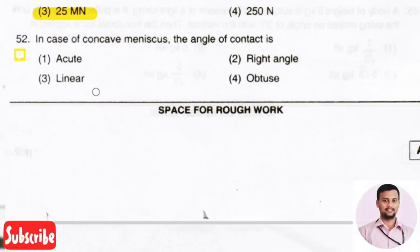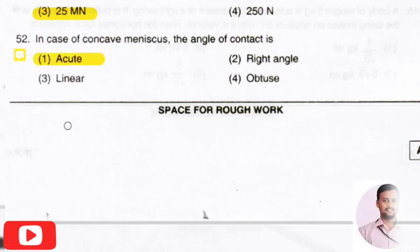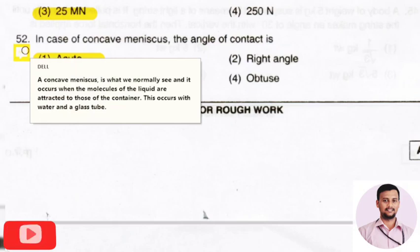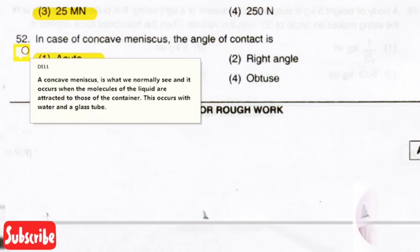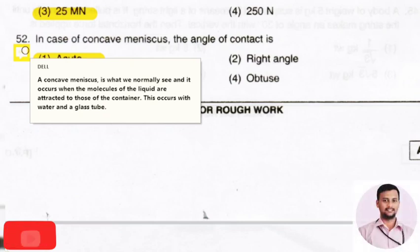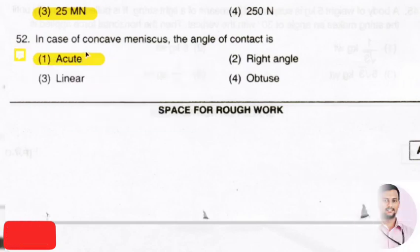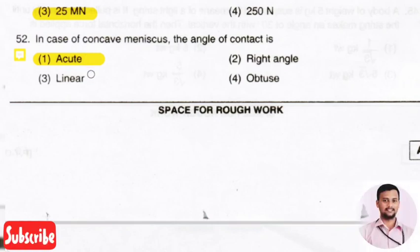The next question: in case of a concave meniscus, the angle of contact is? The right answer is option 1, that is acute angle. A concave meniscus occurs when the molecules of the liquid are attracted to those of the container, as seen with water in a glass tube. So the angle of contact in a concave meniscus is an acute angle.